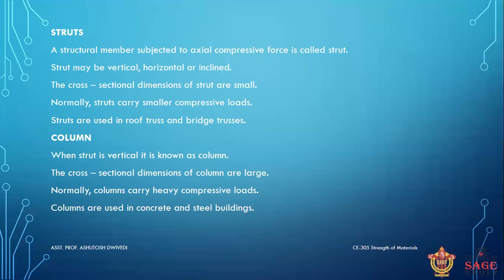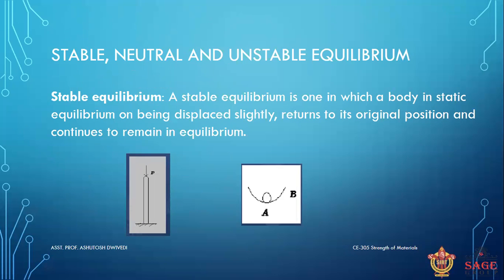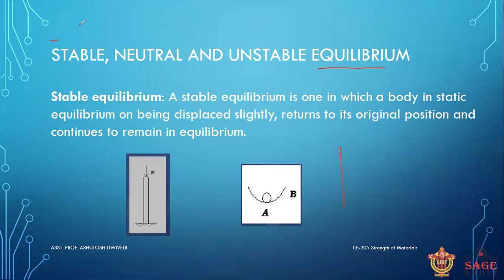There are actually three kinds of columns: short, intermediate, and long. Before going to this topic, let me talk about equilibrium. There are three types of equilibrium — stable equilibrium, neutral equilibrium, and unstable equilibrium — because a column can go through all three equilibrium conditions.